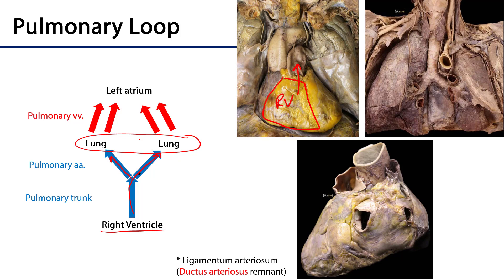Blood is then returned through four major pulmonary veins to the left atrium. We can also see here an interesting vascular novelty — that's the ligamentum arteriosum, which is a remnant of the ductus arteriosus. In fetal circulation, the ductus arteriosus conducts relatively oxygenated blood from the pulmonary trunk, in the vicinity of the origin of the left pulmonary artery, out to the arch of the aorta. So this is a bypass of pulmonary circulation in utero.